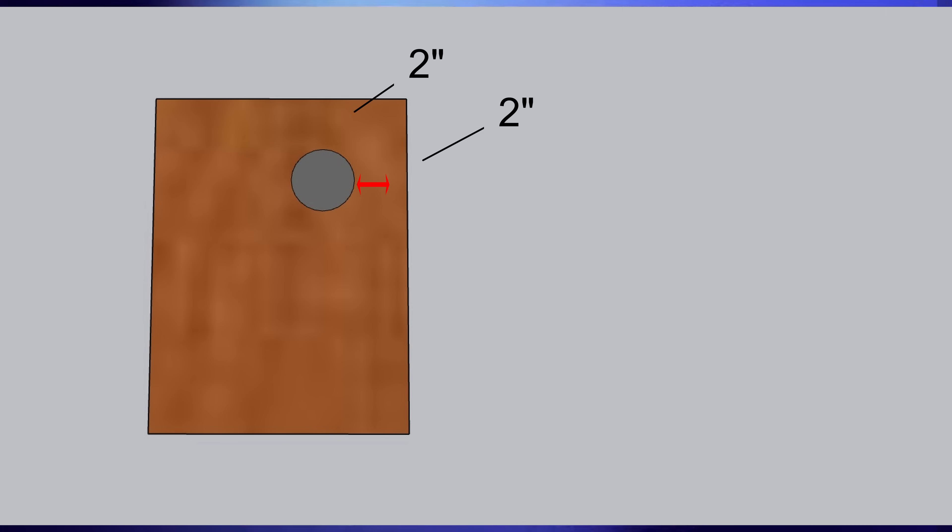In my example of two and three inches: if you moved the tweeter over to make it two inches from both the left side and the top, you would actually just be making it worse. Horizontally, we're going to move around, so you're naturally offsetting the distance between the baffle edges and the tweeter all the time horizontally — not so much vertically.